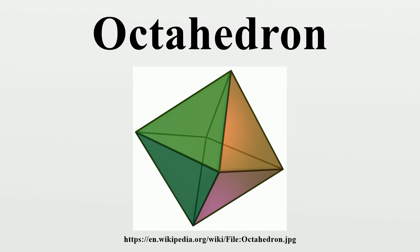Octahedra in art and culture: especially in role-playing games, this solid is known as a d8, one of the more common polyhedral dice. If each edge of an octahedron is replaced by a 1-ohm resistor, the resistance between opposite vertices is 1.5 ohms, and that between adjacent vertices is 5/12 ohms. Six musical notes can be arranged on the vertices of an octahedron such that each edge represents a consonant dyad and each face represents a consonant triad. A framework of repeating tetrahedrons and octahedrons was invented by Buckminster Fuller in the 1950s, known as a space frame, commonly regarded as the strongest structure for resisting cantilever stresses.